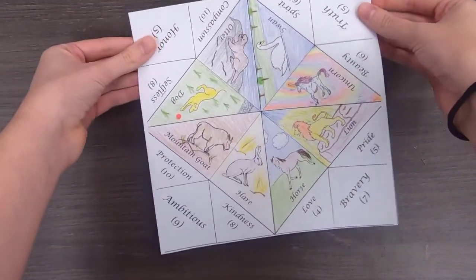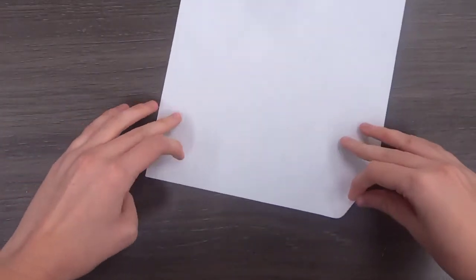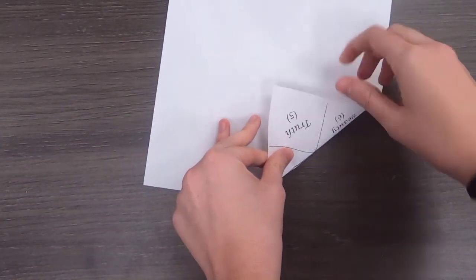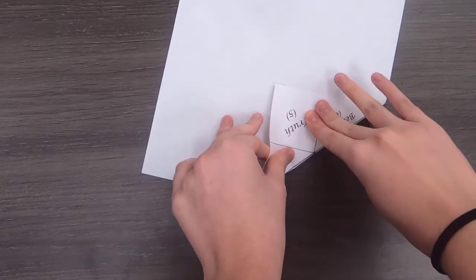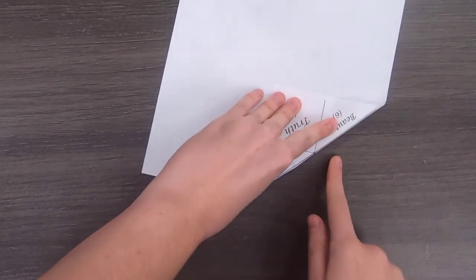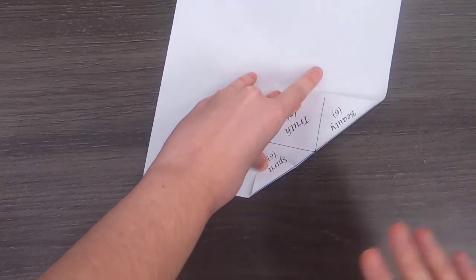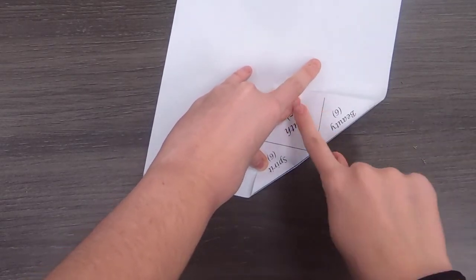So first things first, you should have a square piece of paper like this. You're going to flip it over. And you are going to take the corner like this and try to line it up with that line. It's okay if it's not perfect. This is one of the easier ones, so it does not have to be perfect at all.